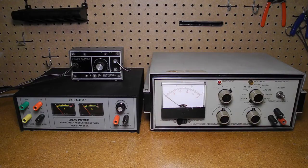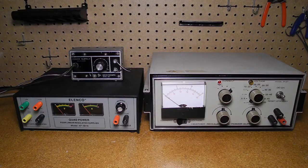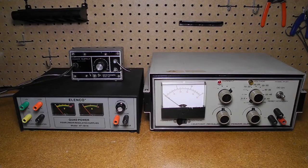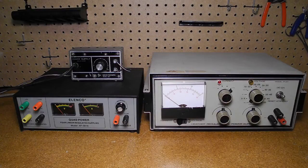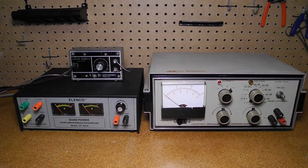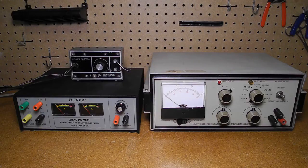Vacuum tube circuits tend to require high voltages, anywhere from about 150 volts DC to 500 volts DC or more, while solid state circuits generally operate on low voltages, often 12 volts or 5 volts for digital circuits. Tubes also typically require either 6.3 or 12.6 volts AC to power the tube filaments.